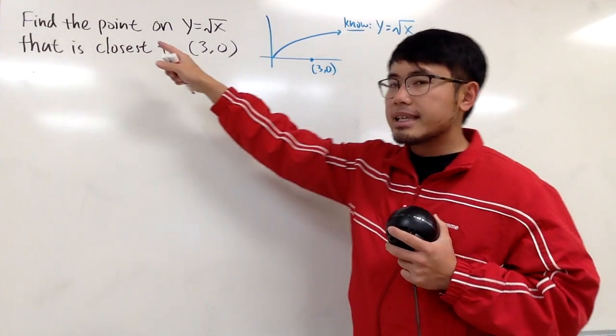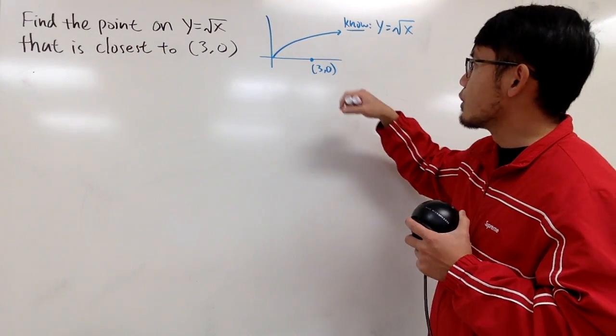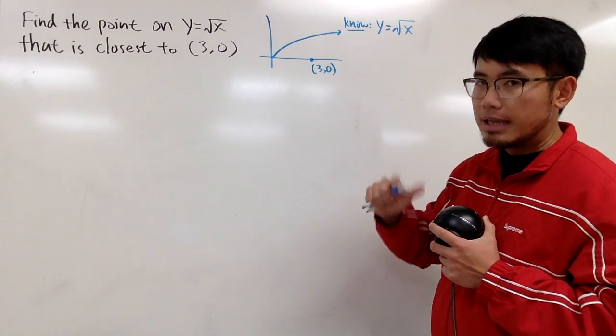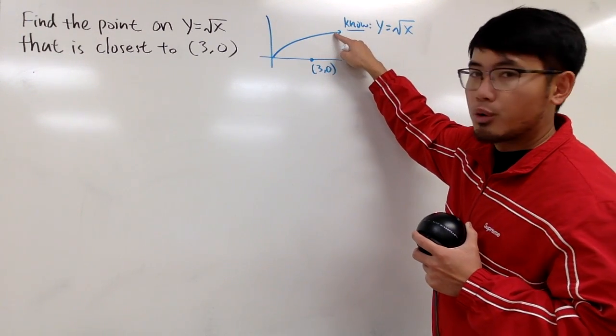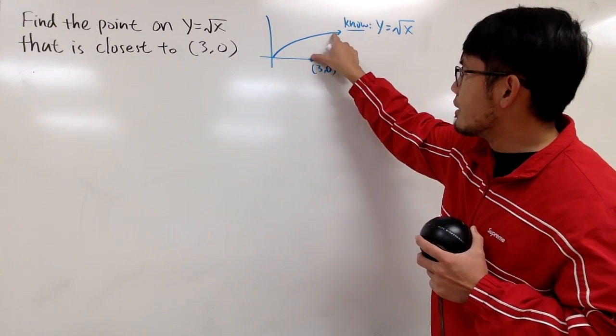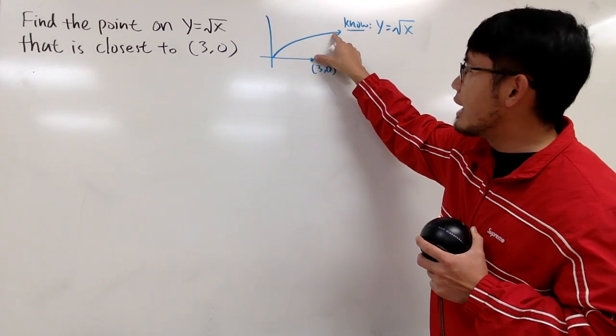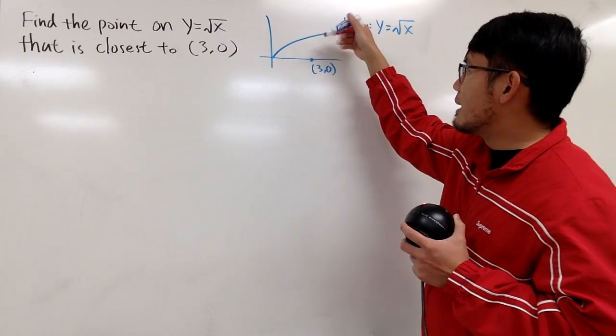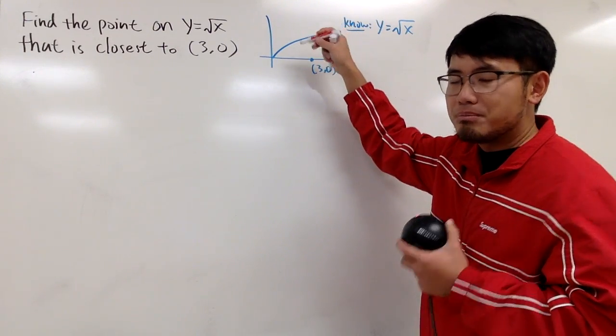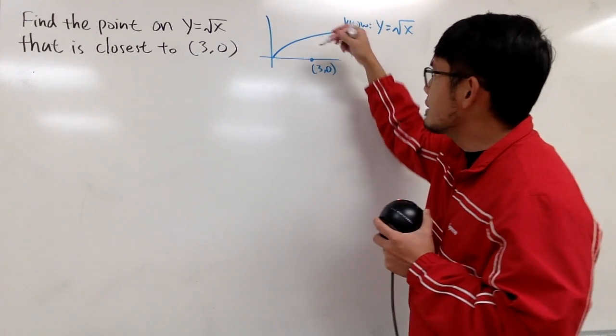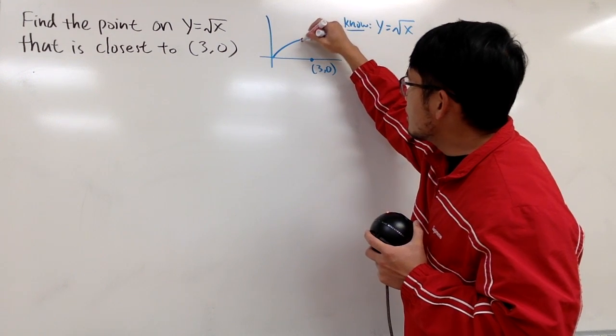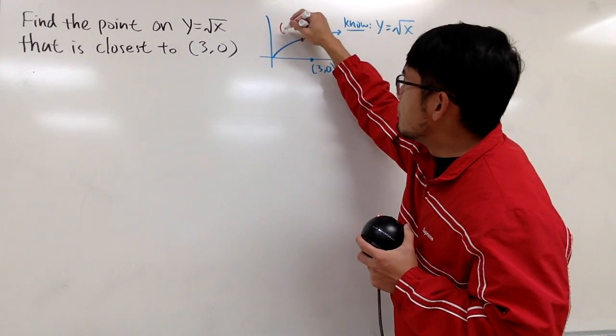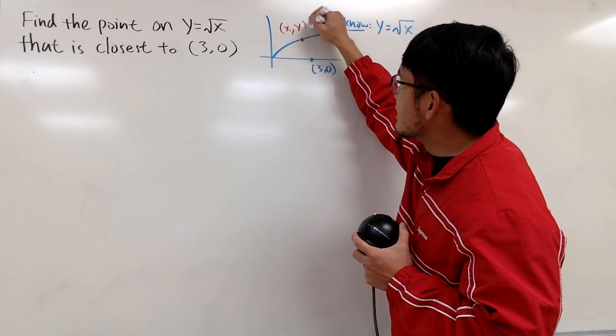And now, the question is asking us to find the point on the curve so that the distance will be the smallest from the point to here. As you can see, imagine if you put a point right here to here, then this distance is actually going to be longer than the distance from here to here. I can just kind of eyeball it. So you can kind of expect the answer should be somewhere here, but I don't know the exact value for it. Let me just put a point here, not necessarily straight up. So let me just put it somewhere here. And most importantly, label this with x, y.